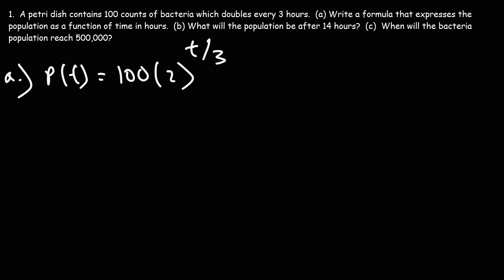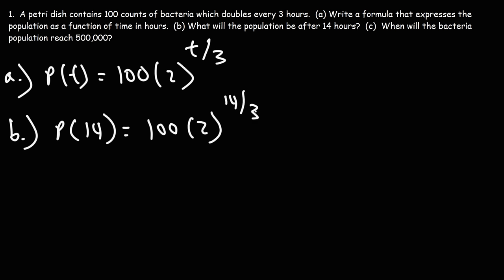Part B: what will be the population after 14 hours? To do that, we just replace t with 14. So it's 2 raised to the 14 over 3, multiplied by 100. Rounding to the nearest whole number, that's approximately 2,540 counts of bacteria. That's the answer for part B.